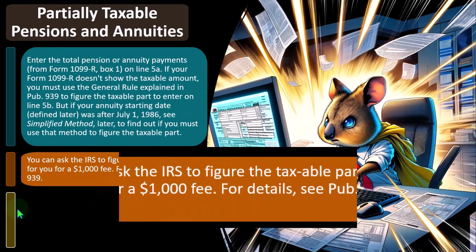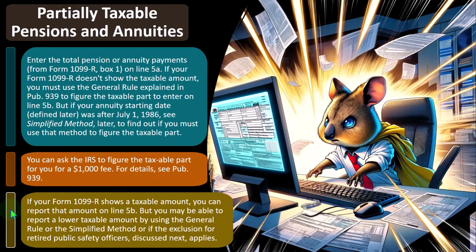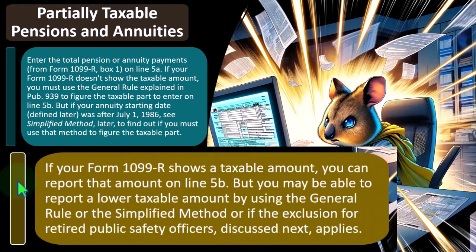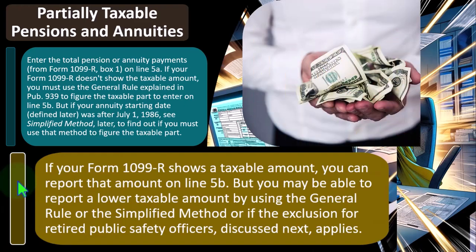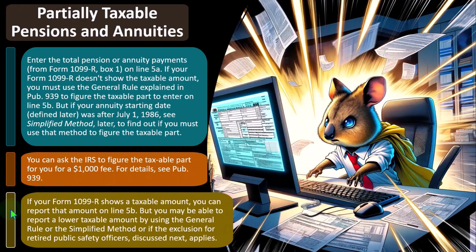You can ask the IRS to figure the taxable part for you for a $1,000 fee — see Publication 939 for details. If your Form 1099-R shows a taxable amount, you can report that on line 5B, but you may be able to report a lower taxable amount by using the general rule or the simplified method, or if the exclusion for retired public safety officers applies.